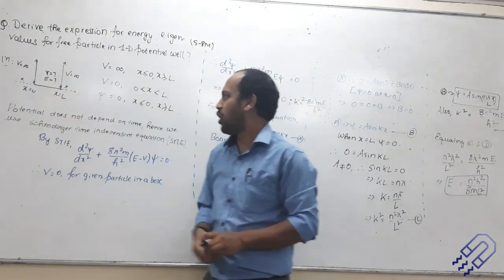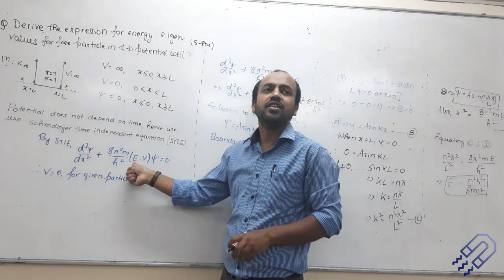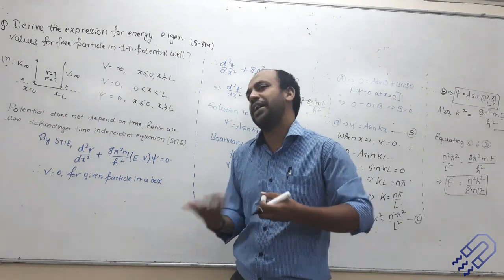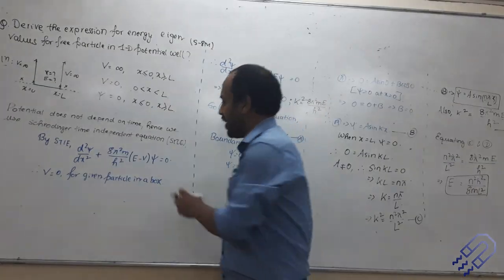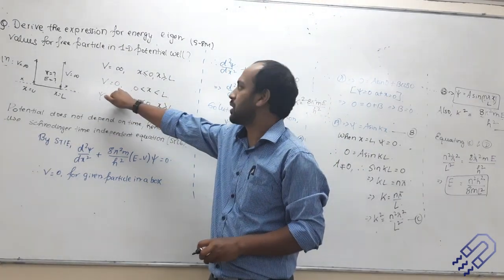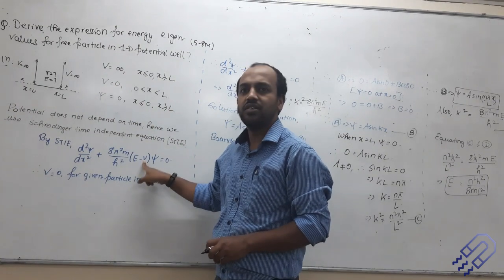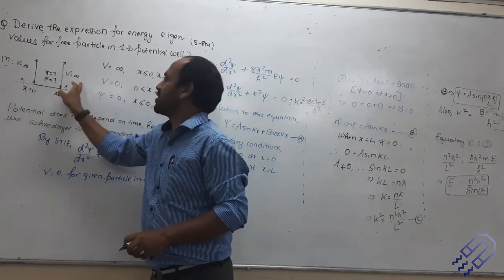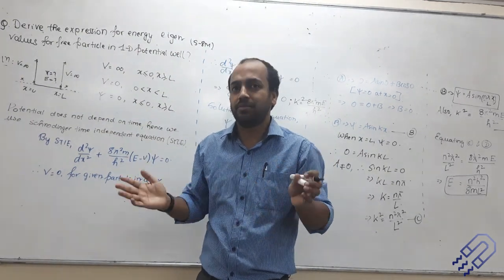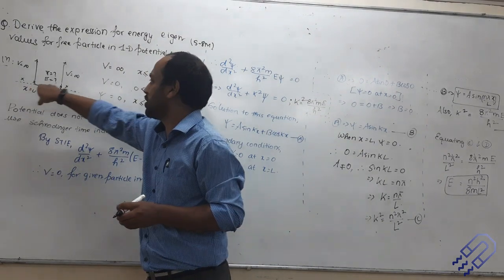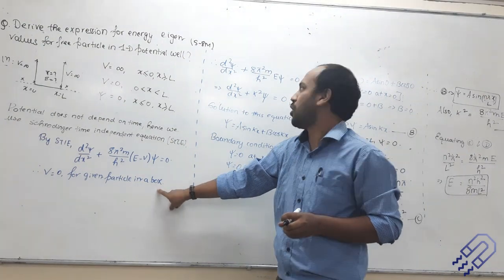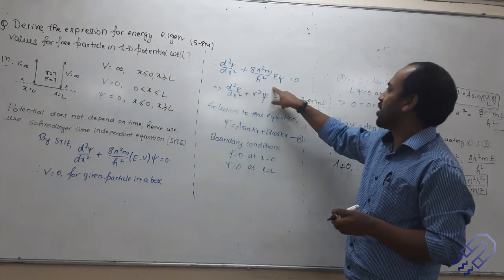When a particle is trapped inside this box, I have to find E — the total energy. Total energy equals kinetic energy plus potential energy. Here we are saying the particle is trapped inside the box, and the potential energy inside is zero. Outside we don't need to consider because the particle does not exist there. So we are only concerned about what happens within the box. I can put V = 0, and so I can write down this simplified expression.